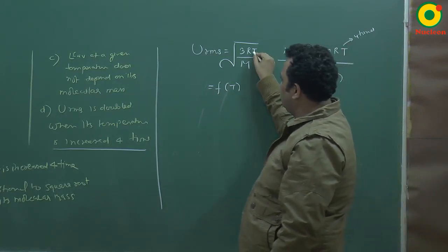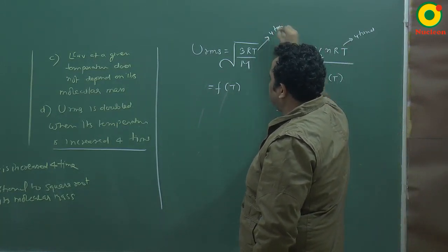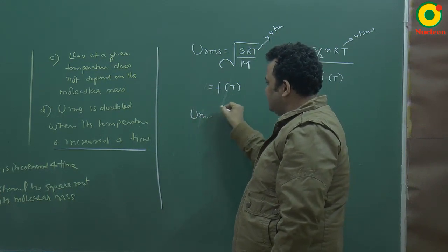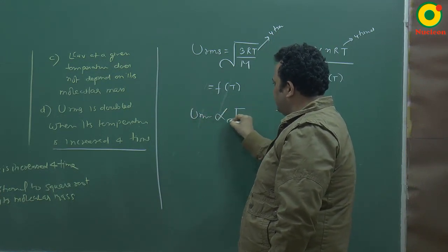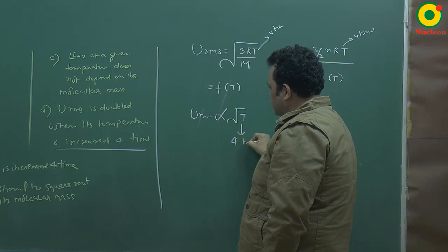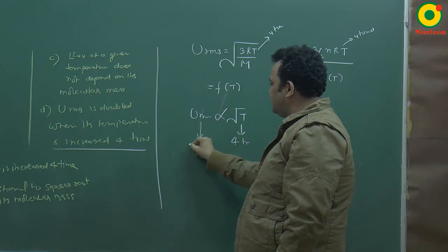If I give temperature 4 times, then because URMS is proportional to root of T, so if it is 4 times, then URMS will double.